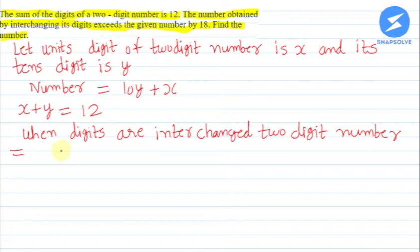When digits are interchanged, the number becomes 10x plus y. This number exceeds the given number, which was 10y plus x, by 18. So the equation is: 10x plus y equals 10y plus x plus 18.